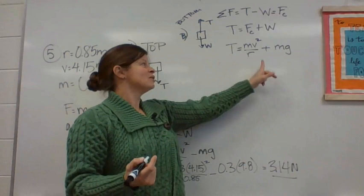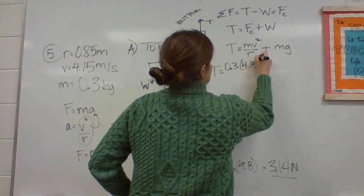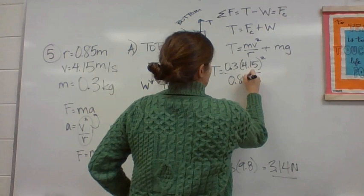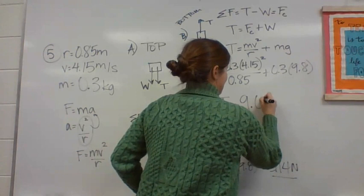T equals 0.3 times 4.15. Same thing again. Order of operations. Make sure you follow it. When I do all of that, I get my tension is 9.02 newtons at the bottom. So clearly the tension is greater at the bottom.